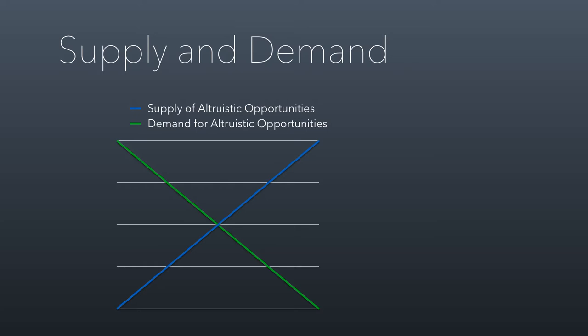So here I've got some roughly drawn supply and demand curves. We've talked about supply and demand before in class — why the supply curve is upward sloping and the demand curve is downward sloping. But the product we're talking about here, instead of widgets or iPhones, is what this author called altruistic opportunities. An altruistic opportunity is essentially a chance for someone to buy altruism — to purchase some good being done in the world.